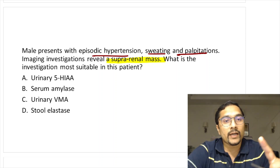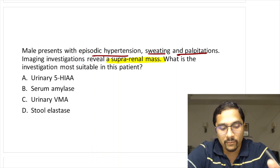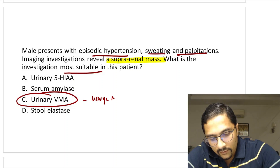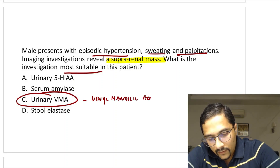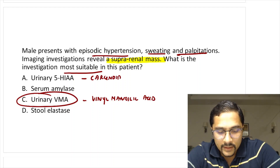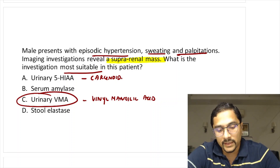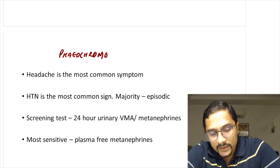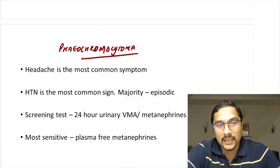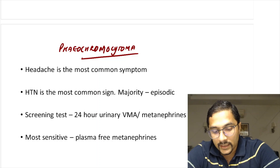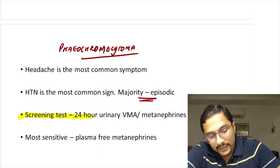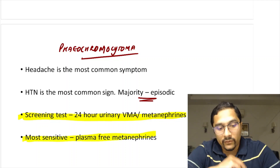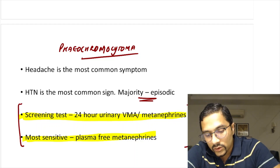Both carcinoid and pheochromocytoma questions were asked this time. For pheochromocytoma, the most suitable investigation is urinary vanillylmandelic acid (VMA). 5-HIAA is for carcinoid tumors; amylase and elastase for pancreatitis. For pheochromocytoma: headache is the most common symptom, hypertension is the most common sign, and hypertension is usually episodic. The screening test is 24-hour urinary VMA or metanephrines; the most sensitive test is plasma-free metanephrines.